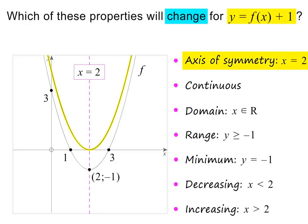The axis of symmetry will still be at x equals 2, because the vertical shift does not change the x-coordinate of the turning point. It will still be continuous, because you can draw the graph without lifting your pencil. The domain is still all real values of x, because the shifted graph still extends forever to the left and right without any breaks. And it is still decreasing to the left of 2 and increasing to the right of 2, because the vertical shift does not change the x-coordinate of the turning point.